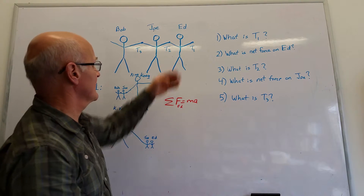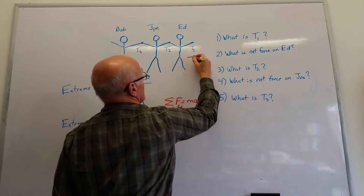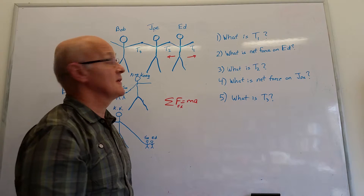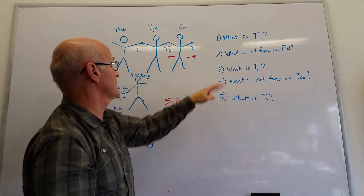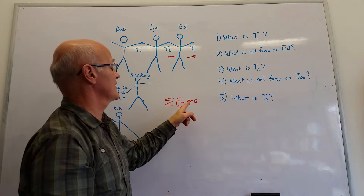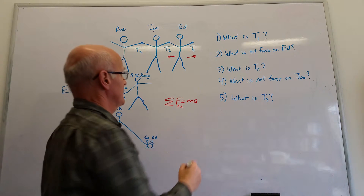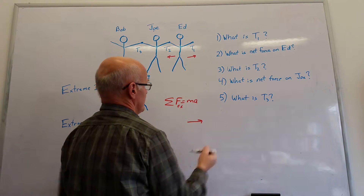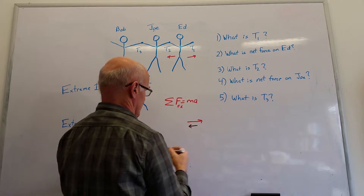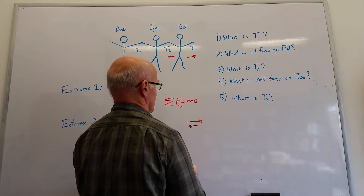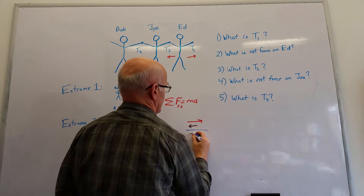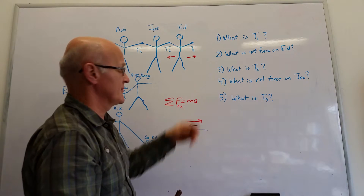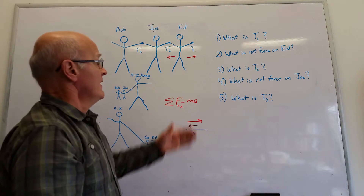The forces acting on Ed are: a force pulling him to the right, and Joe and Bob pulling him backwards. They all end up accelerating in the positive direction, so the net force on Ed still results in forward acceleration. T1 is in the positive direction, T2 is in the negative direction, and when you add those together you get a net force such that Ed still has his acceleration in the forward direction.